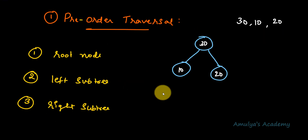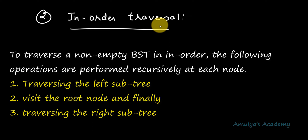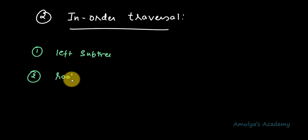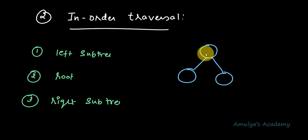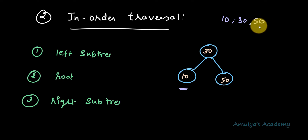Next let's talk about the second traversal algorithm: in-order traversal. To traverse a non-empty binary tree in in-order, follow these steps recursively: first visit the left subtree, second visit the root node, and finally visit the right subtree. For a simple tree this gives: left (10), root (30), right (50). In in-order traversal we get the values in ascending order because BST is ordered.